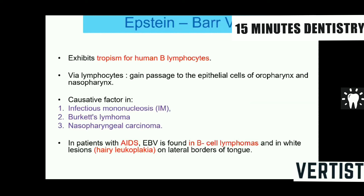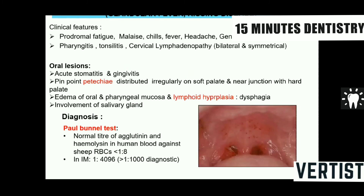Epstein-Barr virus has a tropism for B lymphocytes and is a positive factor in infectious mononucleosis, which produces lymphoid hyperplasia, Burkitt's lymphoma, nasopharyngeal carcinoma, B-cell lymphoma in AIDS, and hairy leukoplakia on the lateral borders of the tongue in AIDS. Infectious mononucleosis, also called glandular fever or kissing disease, is characterized by cervical lymphadenopathy, pharyngitis, and tonsillitis. Intraoral lesions include stomatitis, gingivitis, and petechiae on the soft palate near the junction of hard and soft palate. The Paul-Bunnell test is positive.